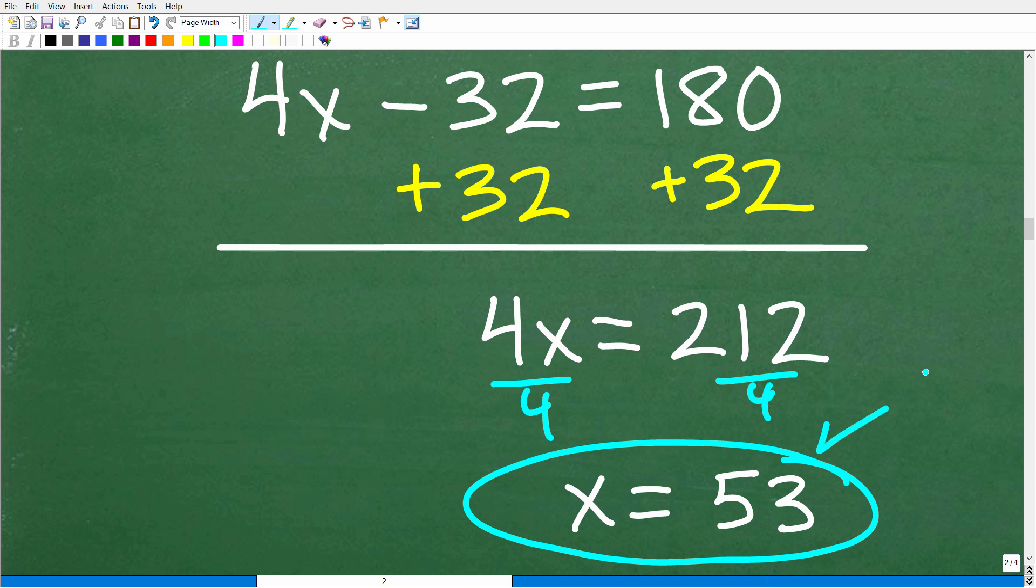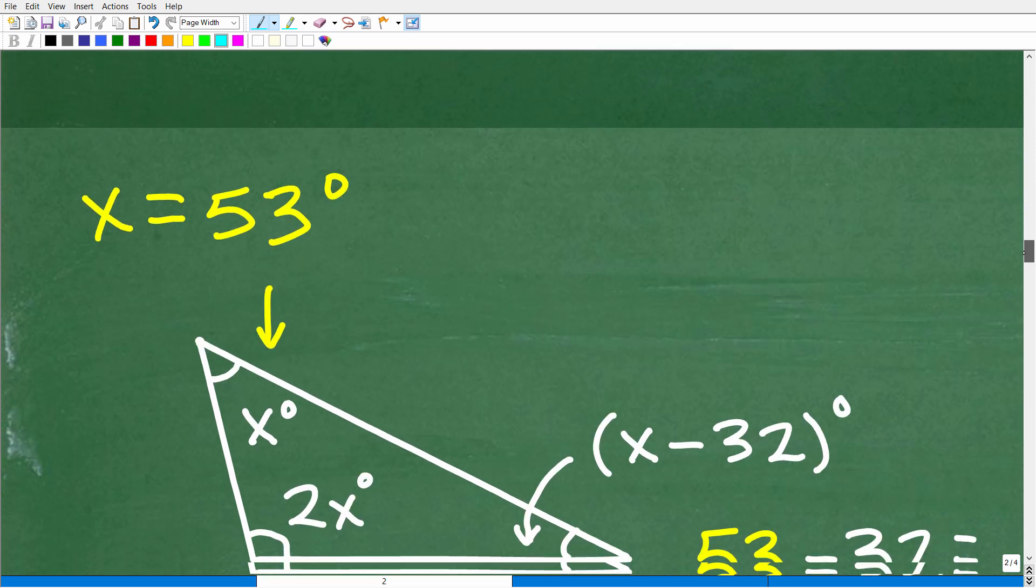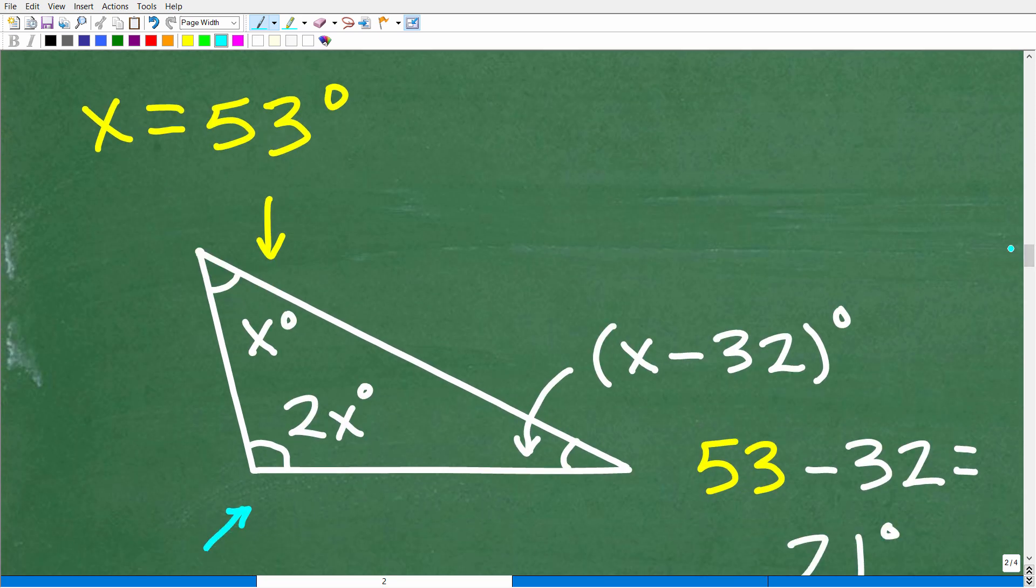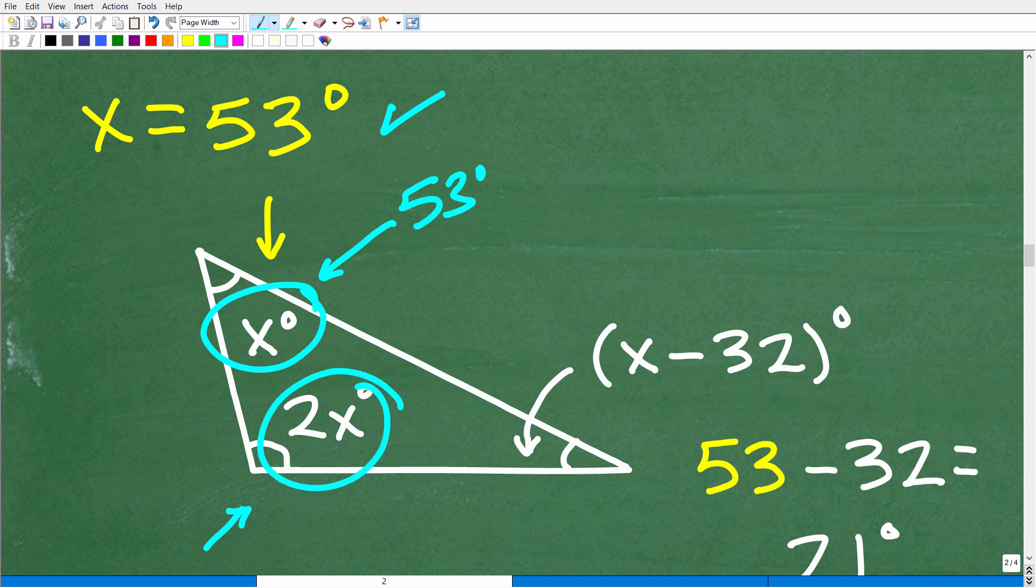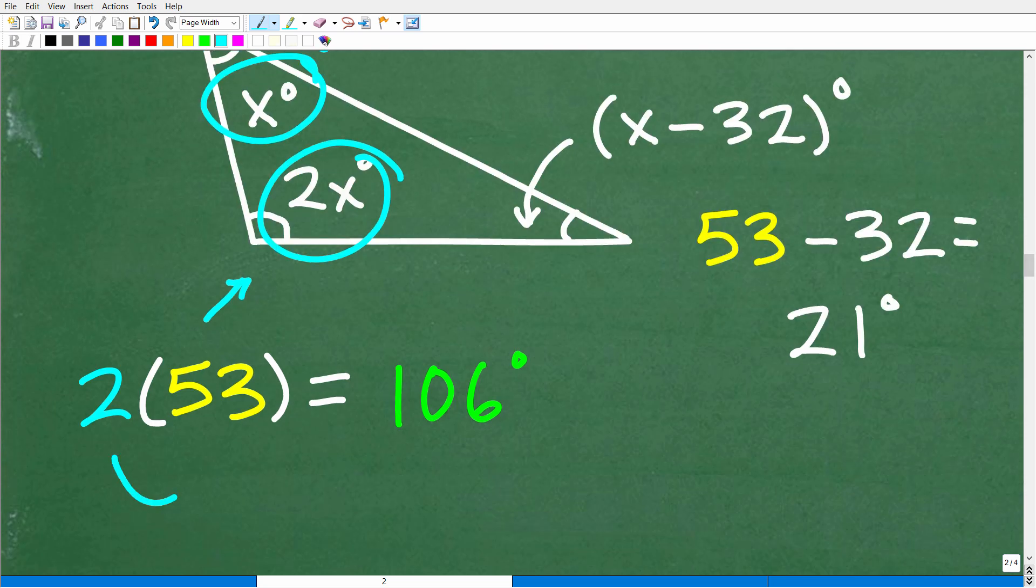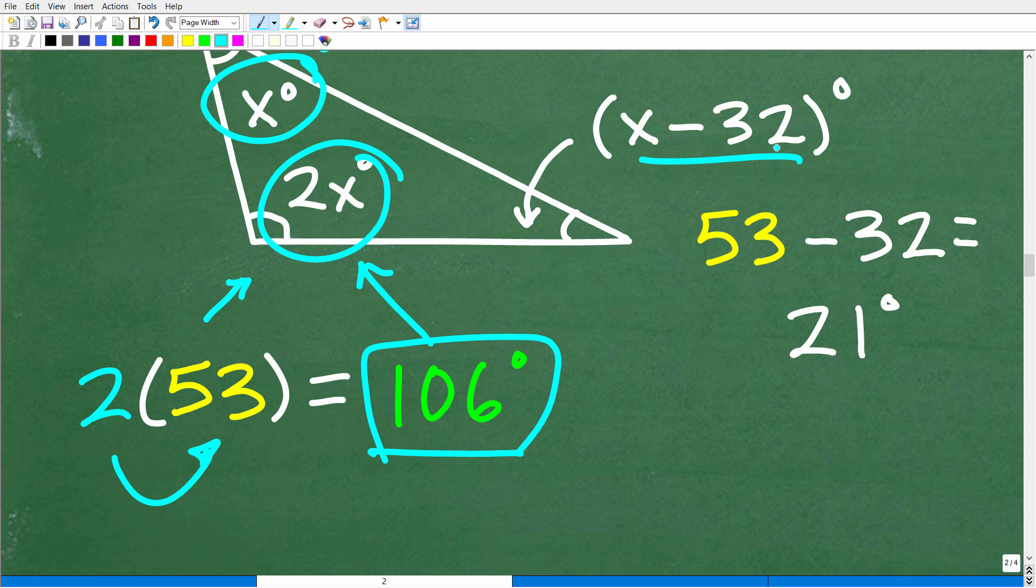But we don't stop here, right? So the question is, what are the angles of this triangle? So we have to go back to our lovely picture of this triangle and say, okay, X is 53 degrees. So this angle here is X. So this angle right here is in fact 53 degrees. Well, this angle here is 2X. So how do we calculate that? Well, easy. Just take 2, multiply it by what X is, which now is 53 degrees. So this is 106 degrees. And then, of course, to find this angle, X minus 32 degrees, we know what X is. That is 53 minus 32. That's 21 degrees.